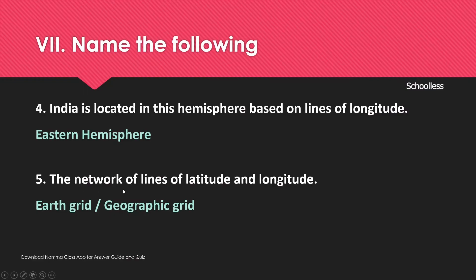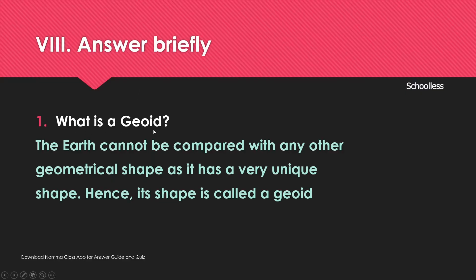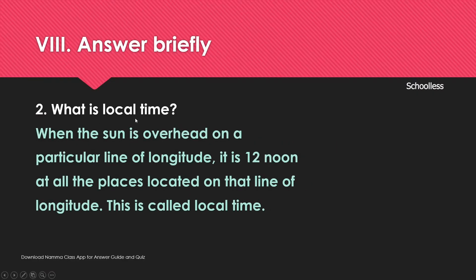The network of lines of latitude and longitude is called the Earth Grid or Geographic Grid. The Earth cannot be compared with any other geometrical shape as it has a very unique shape — hence its shape is called the Geoid. Local time: when the sun is overhead on a particular line of longitude, it is 12 noon at all places on that line of longitude — this is called local time.